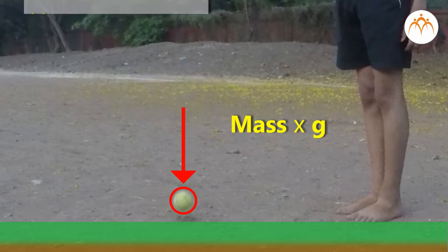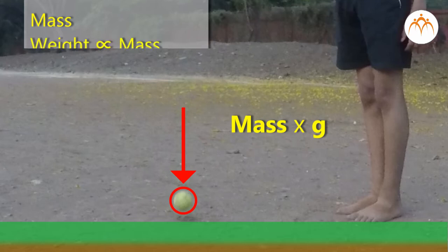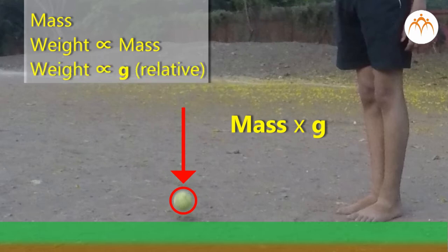An object's mass does not depend on gravity. An object's weight is proportional to mass, but it depends on which planet you are on — it is proportional to the strength of the local gravitational field.